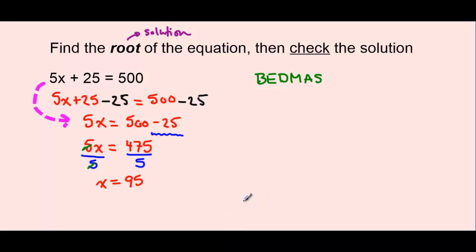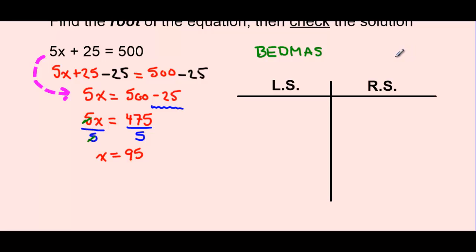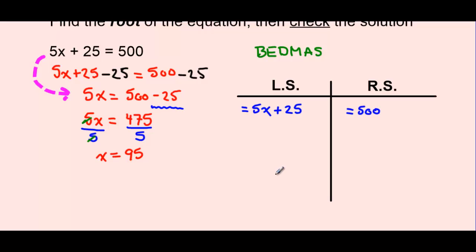Our next step is to check whether x equals 95 is the correct answer. In math, the proper way to do this is to use a left-side right-side check. To perform a proper left-side right-side check, we look at our original question and identify what part of the equation was on the left side of the equal sign and what part was on the right. We make a T-graph to separate the left side and right side, as a reminder that we don't ever want to cross any calculations from one side to the other — we simply simplify and solve each side on their own.